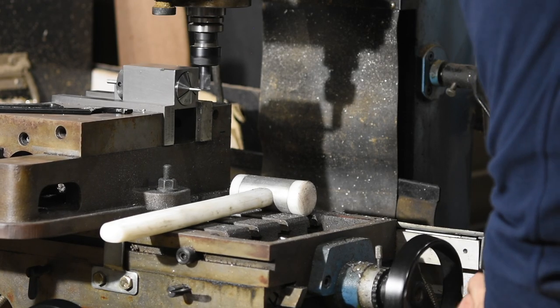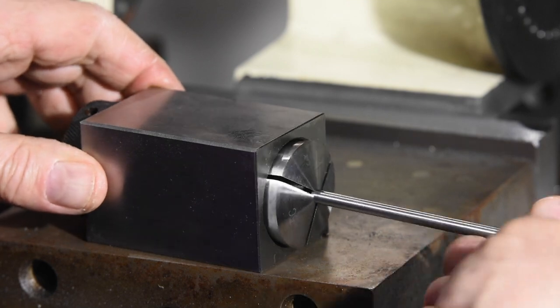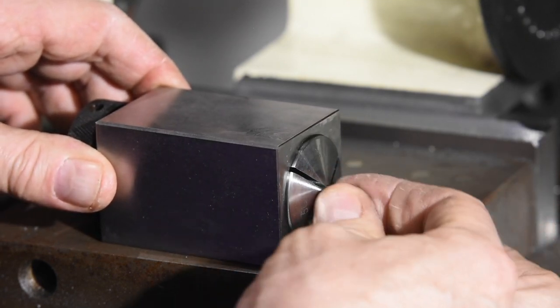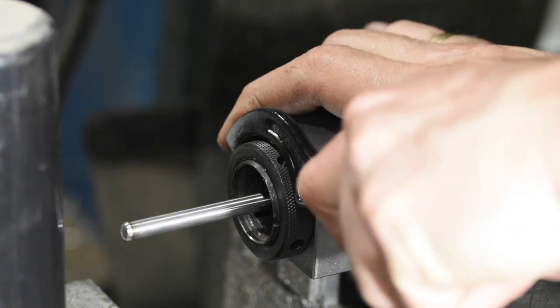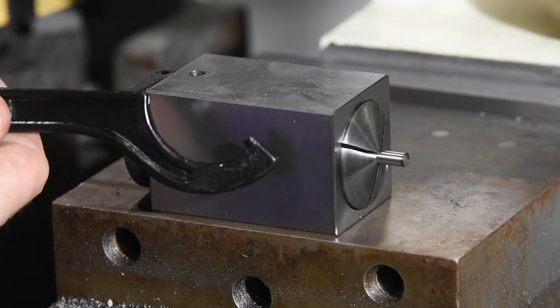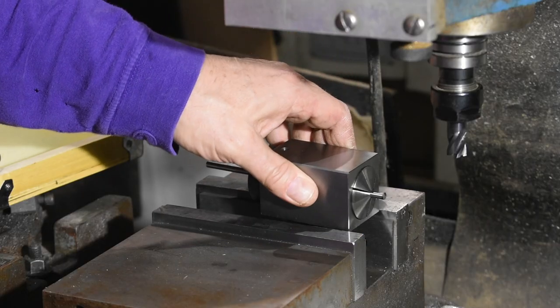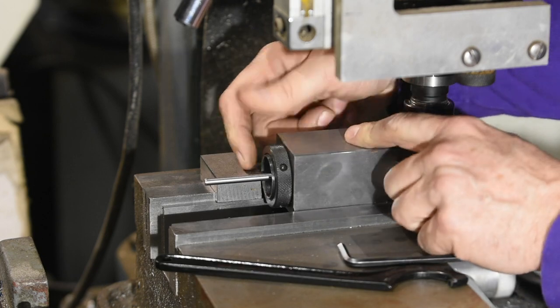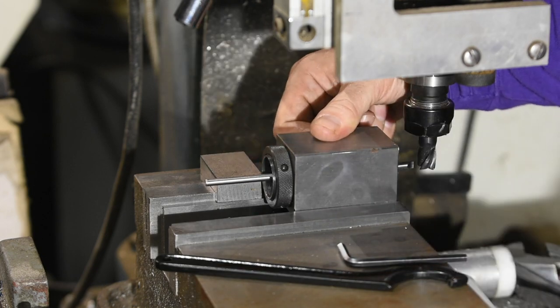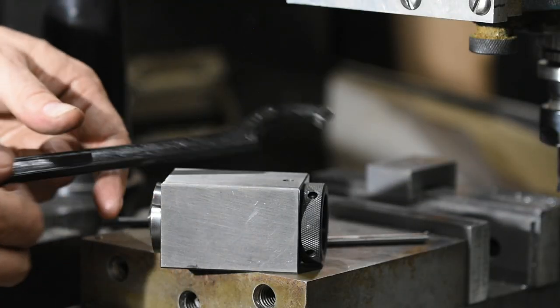So here's how I milled the actual slotty, webby, bladey bits of the screwdriver, the business end. As I did with the gunsmithing screwdrivers, I'll be using a mill and a 5C collet block. Again, details on this whole process is shown in the previous video about the gunsmithing screwdrivers.